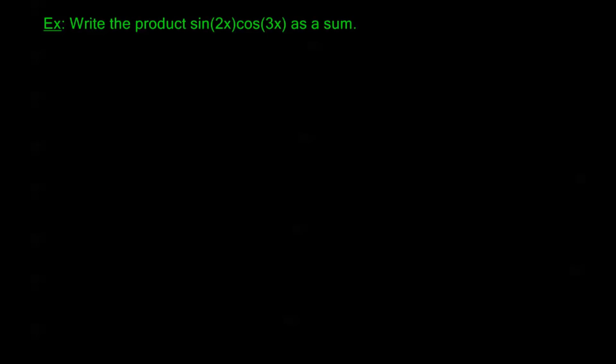So let's say we want to write this product, sine 2x, cosine 3x, as a sum. Now the problem itself is pretty much just telling you what you're supposed to do, isn't it? I need to take a product and write it as a sum. So we're going to be using our product to sum formula. We only have one product to sum that deals with mixed sine times cosine. So go ahead and refer to wherever you put those formulas.